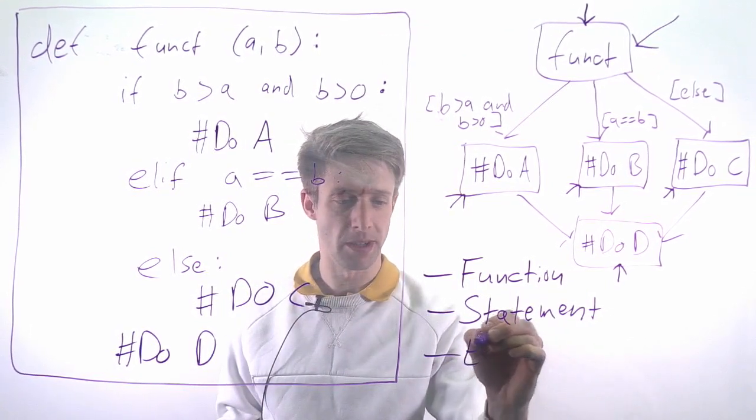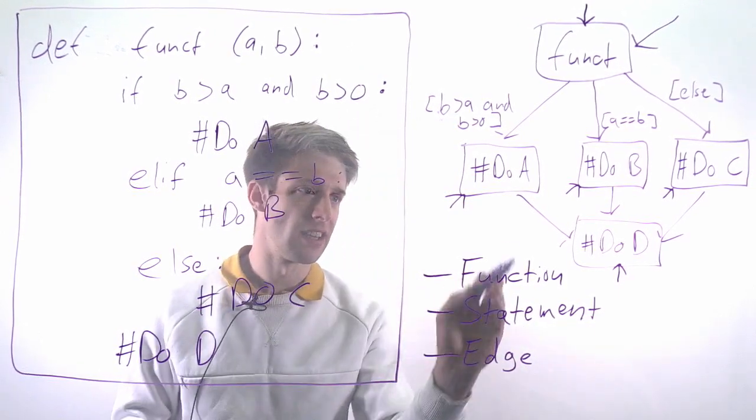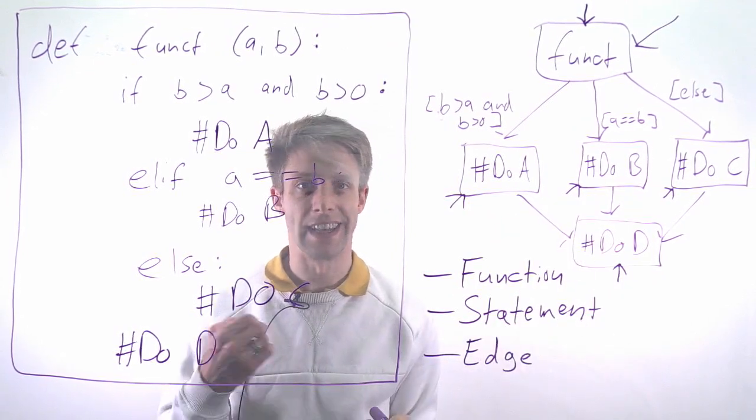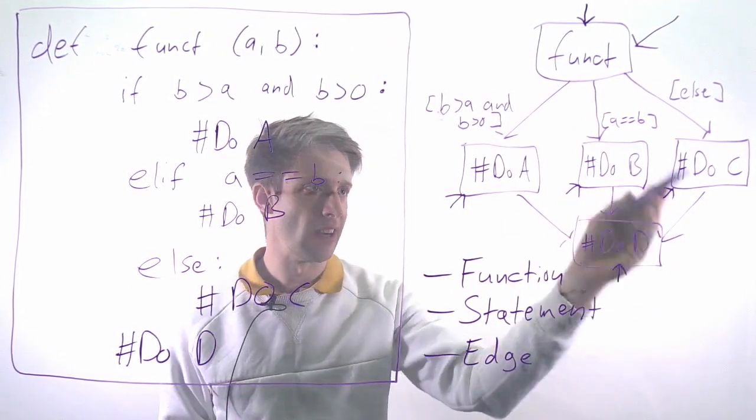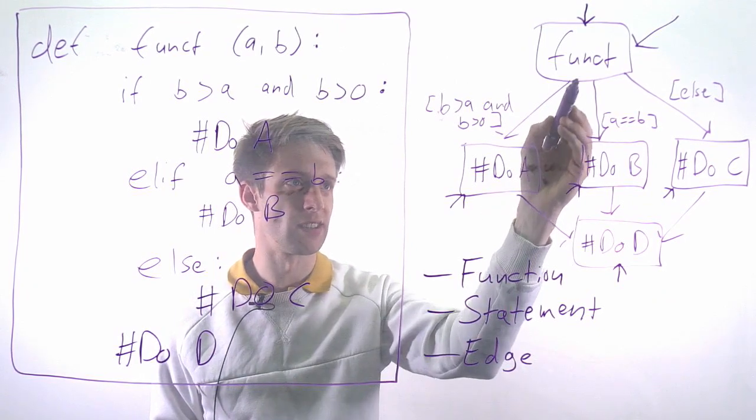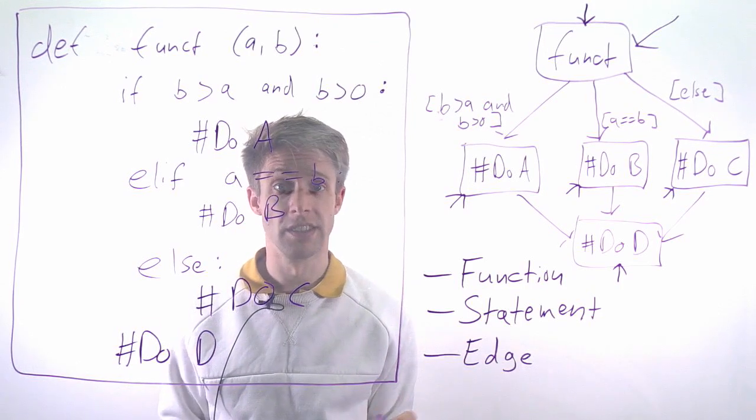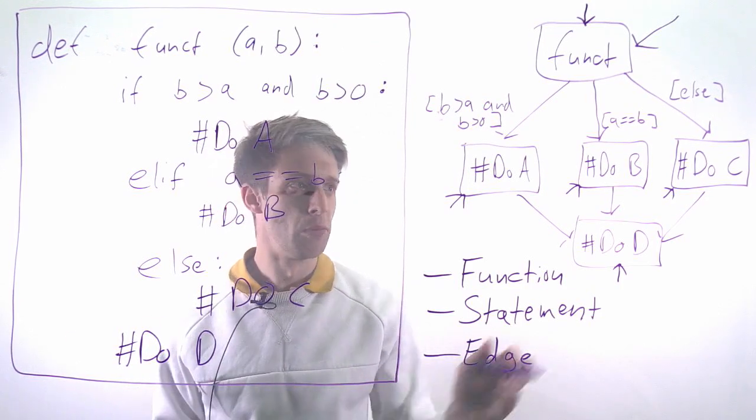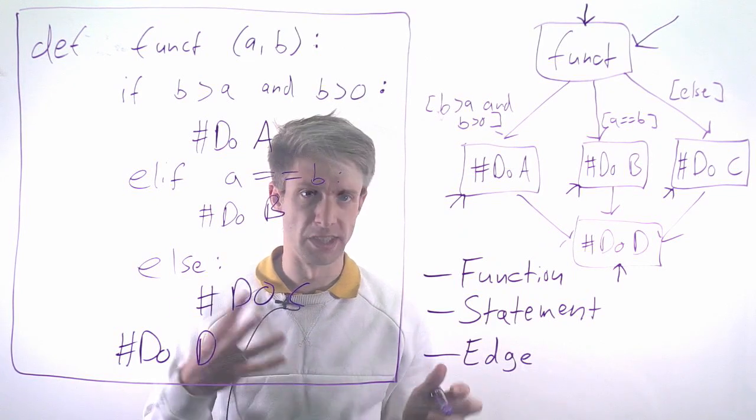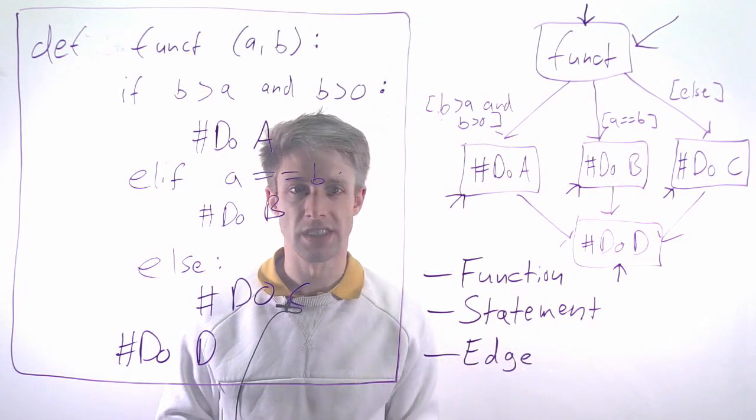Then we also have edge coverage. This looks at these different arrows here. Are all the different arrows visited at least once? In our case, it's exactly the same. If we have three tests going one, two, three, then we have visited all the edges and we have 100% edge coverage. But in different programs, this might look slightly different, so statement coverage is not the same as edge coverage.